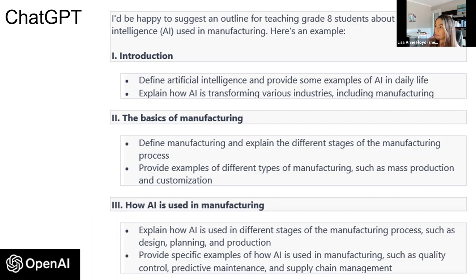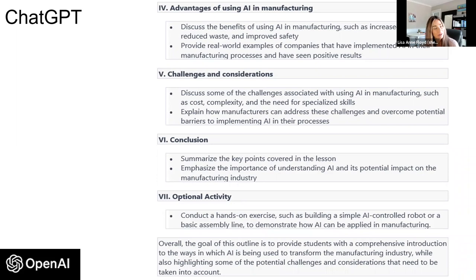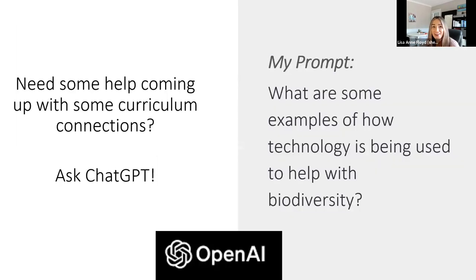ChatGPT's outline suggested: defining AI, explaining basics of manufacturing, exploring how AI is used in manufacturing, advantages, and challenges and considerations — sort of like an essay structure with a conclusion. You could then follow up asking about specific challenges and verify the information. It's useful for when you don't know a lot about a topic — you can just ask the chatbot.